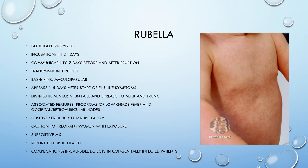Next we have rubella, caused by rubivirus. Incubation is 14 to 21 days. It's communicable 7 days before and after the rash eruption, and transmission is droplet. The rash is pink and maculopapular, appearing 1 to 5 days after the start of flu-like symptoms. It starts on the face and spreads to the neck and trunk. It's associated with a prodrome of low-grade fever and occipital and retroauricular lymph nodes. Serology will show positive IgM for rubella. You should advise caution to pregnant women given the risk of congenital deformities including blindness. Rubella is treated with supportive management and is also a mandatory report to public health.